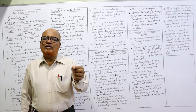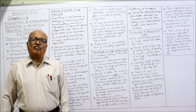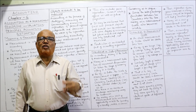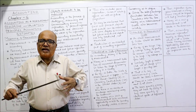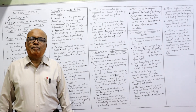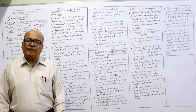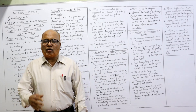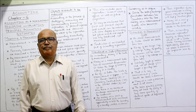Regarding the standard or scale of measurement — how to measure transactions — we can measure in different ways. The most commonly used scale is money. Salary paid, wages paid, rent paid, electricity bills, telephone bills, purchases, and sales are all measured in terms of money. The standard of measurement in accounting is money.